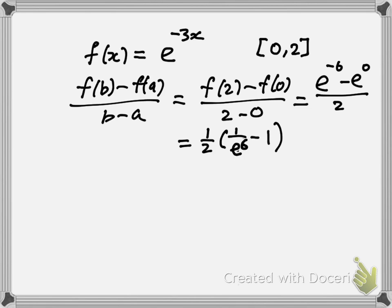Now what c satisfies f prime of c equals that number? f prime of x, by applying chain rule, is negative 3 e to the negative 3x.